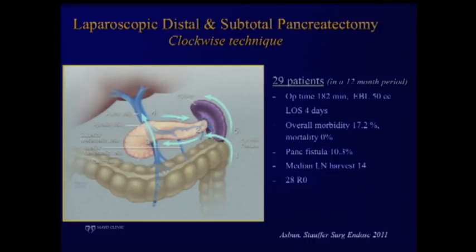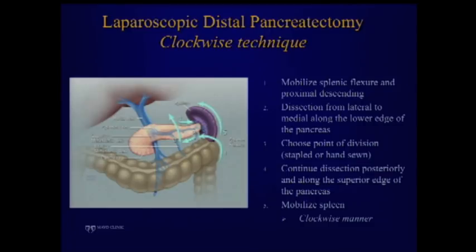Our technique is published in Surgical Endoscopy — 30 patients over 12 months with good operating times, morbidity results, for both benign and malignant disease. We call it the 'clockwise' technique. Step one: mobilize the splenic flexure of the colon. Entering the lesser sac through the most lateral portion avoids fighting with adipose tissue, especially in obese patients. Step two: along the inferior edge of the pancreas. Step three: under the pancreas, or under the neck for subtotal. Step four: continuing posteriorly along the superior edge. Step five: mobilization of the spleen — left for last.